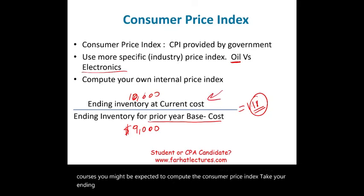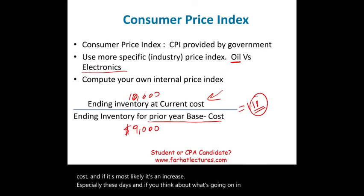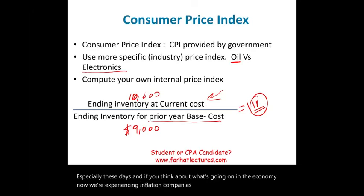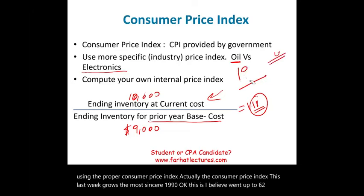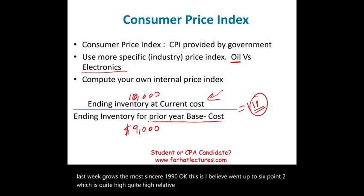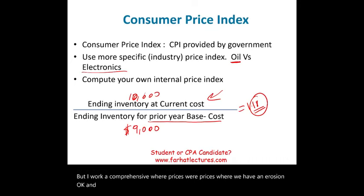Make sure you understand how to compute the consumer price index, as the CPA exam or your courses may require it. Take ending inventory at current cost divided by the prior-year base cost. Most likely you'll see an increase — especially now, as we're experiencing inflation. The consumer price index recently rose the most since 1990, going up to approximately 6.2%, which is quite high relative to recent history. In the next recording, look at the example where I work through a comprehensive case with layer erosion in dollar value LIFO.